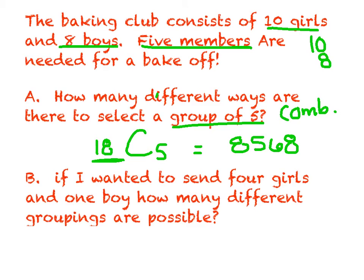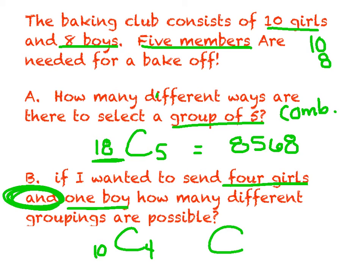Part B, if I wanted to send four girls and, there's that keyword again, one boy, how many different groupings are possible? All right, so since I'm sending girls and boys, I need two separate combinations. One for the girls, one for the boys. So if I wanted to send four girls, I'm choosing four. What's the total number of girls I have to send from? Hopefully you've said ten. And is that big multiplication. And if I want to send one boy, I'm picking one boy from a total of eight. And now carefully type it in. And I've got 1,680 different possible groupings.